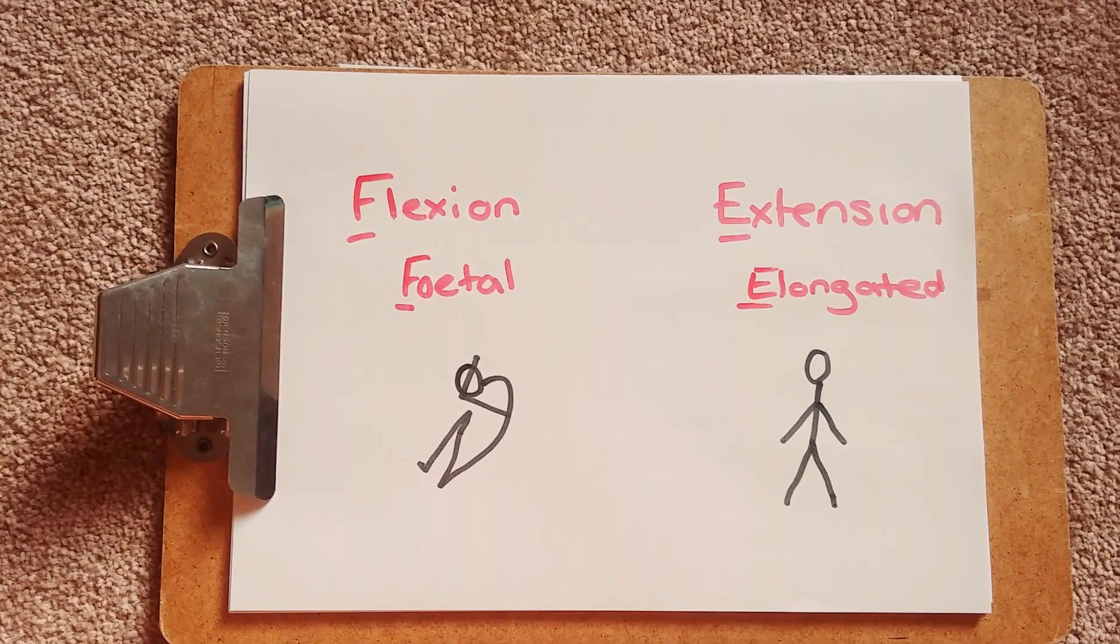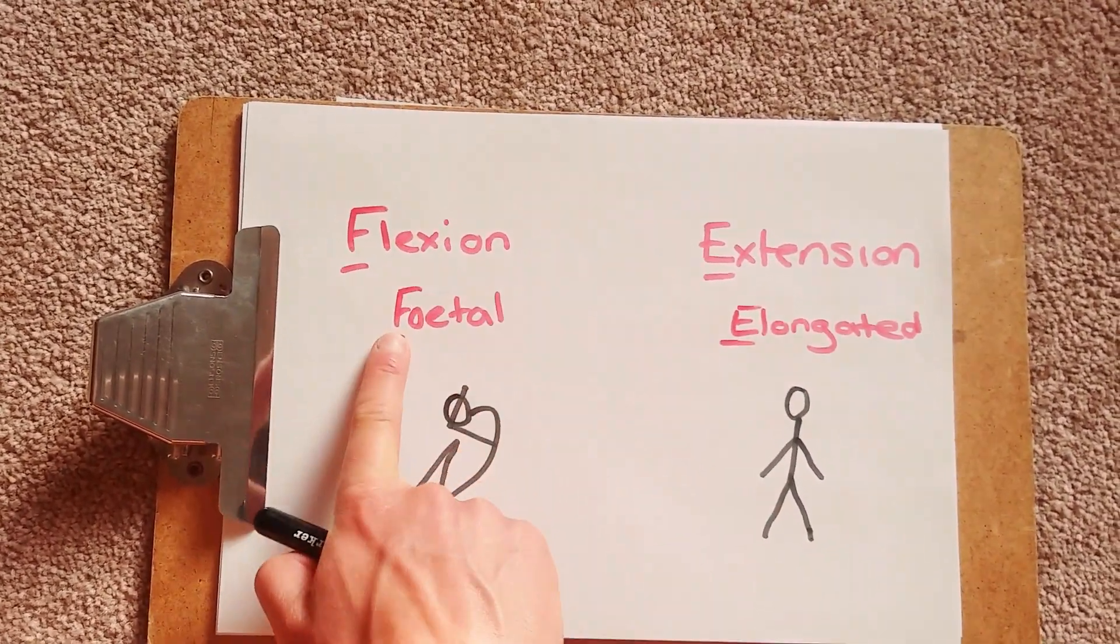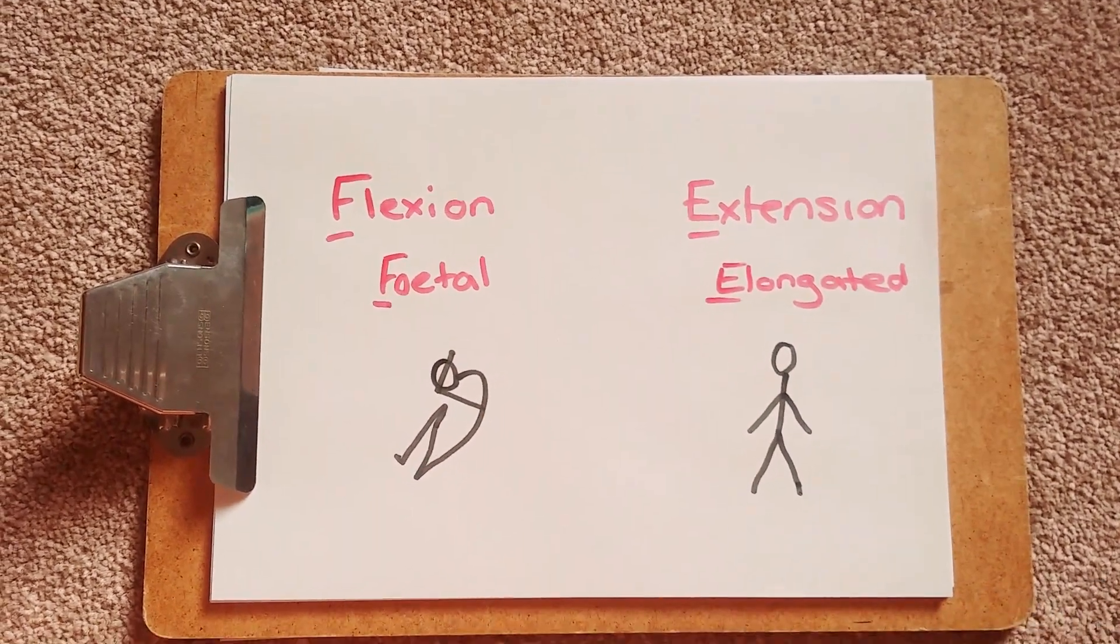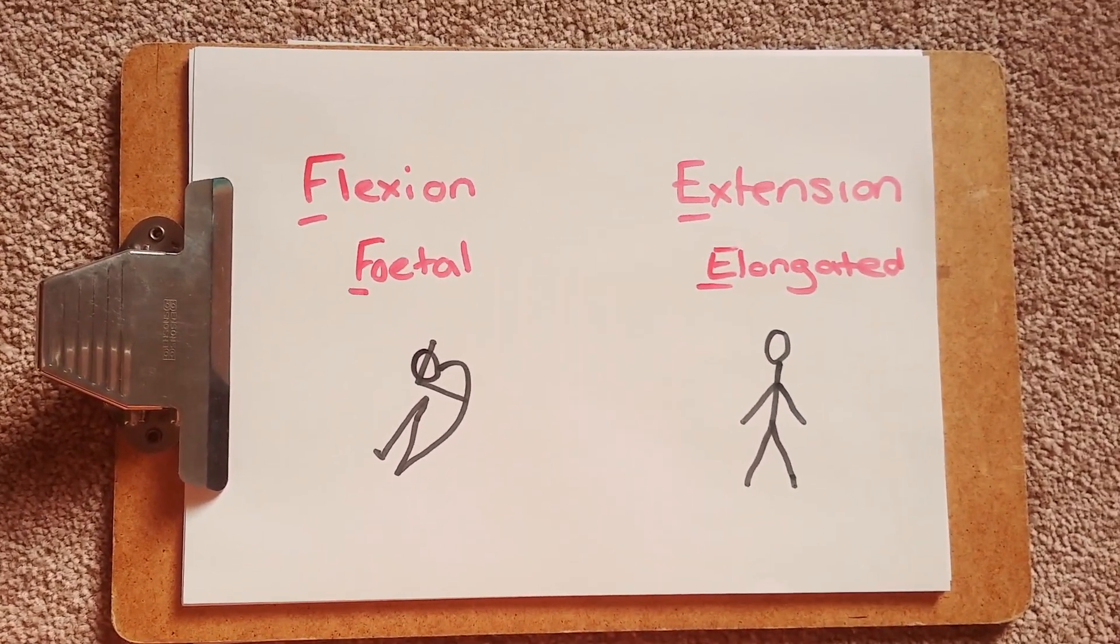So this is my quick tip. E for extension and elongated. F for flexion and fetal. And that's a way of remembering whether you're talking about a joint that is in flexion or in extension.